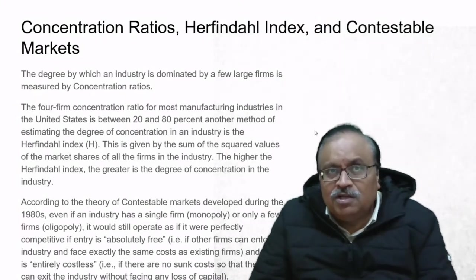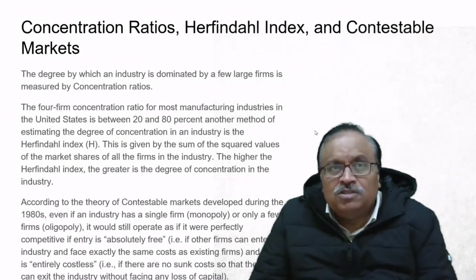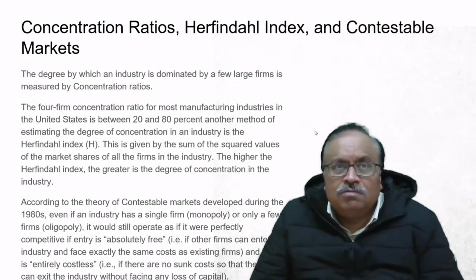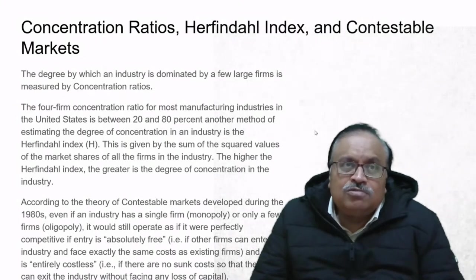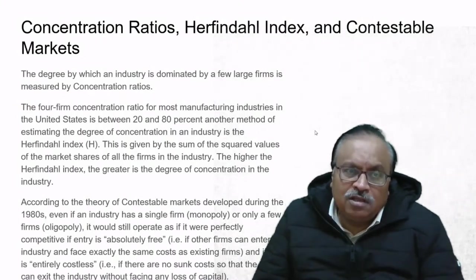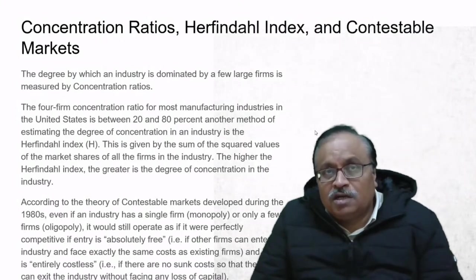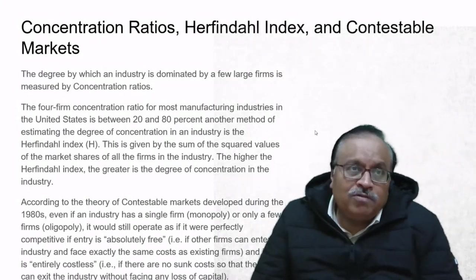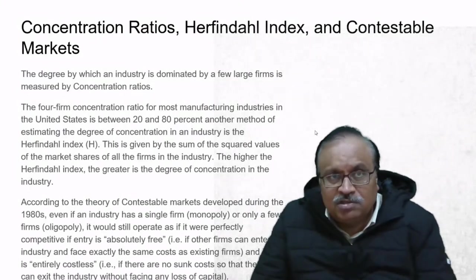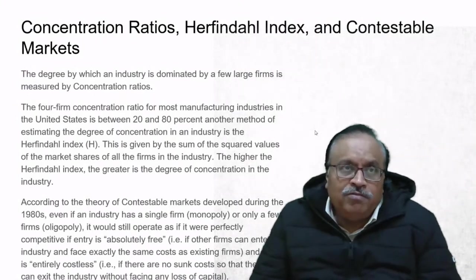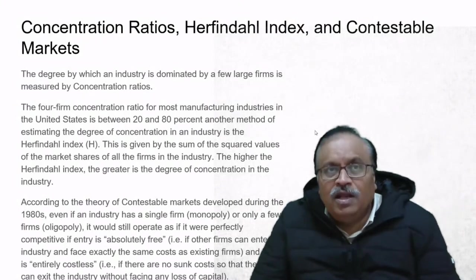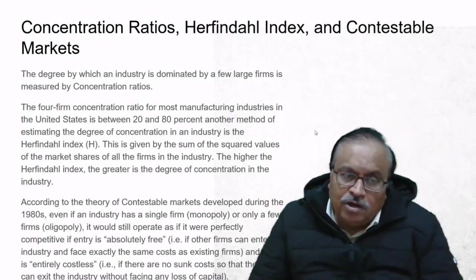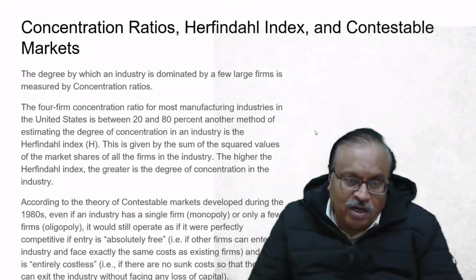If one firm is working with 100 percent market share, 100 squared equals 10,000. Same way, if two firms exist—one with 90 percent share and another with 10 percent—the concentration will be less in comparison to a single firm operating alone. According to the theory of contestable markets developed during the 1980s, even if an industry has a single firm (monopoly) or only a few firms (oligopoly), it would still operate as if perfectly competitive if entry is absolutely free.